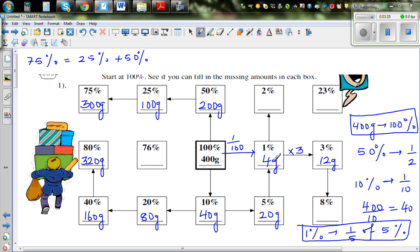So now what is left? You have got 76%, 2%. So from 1% you can find 2% by timesing it by 2 which is 8 grams.